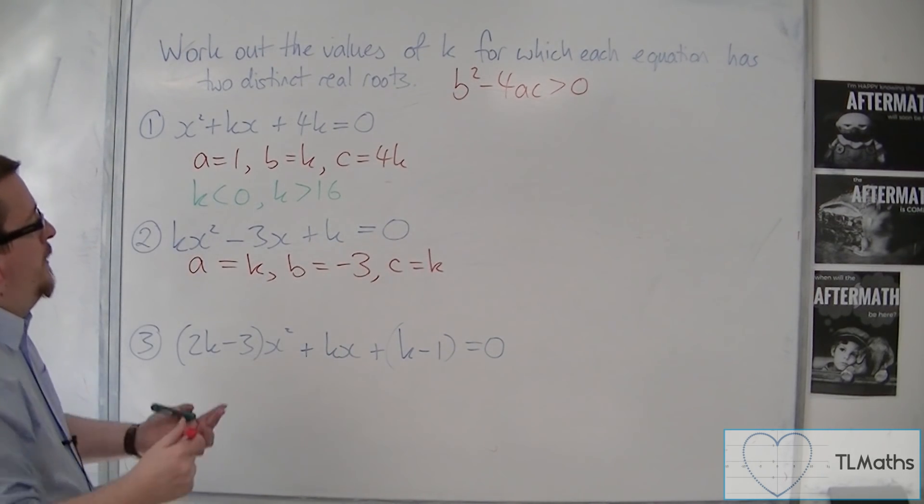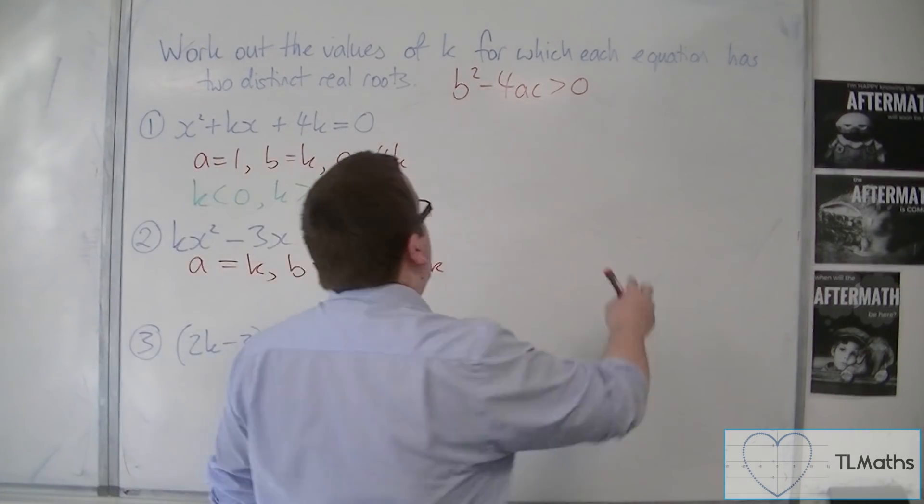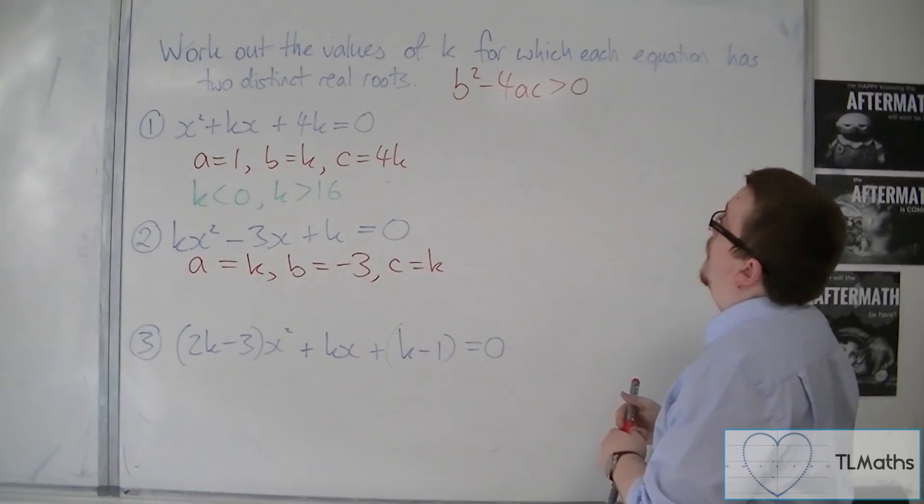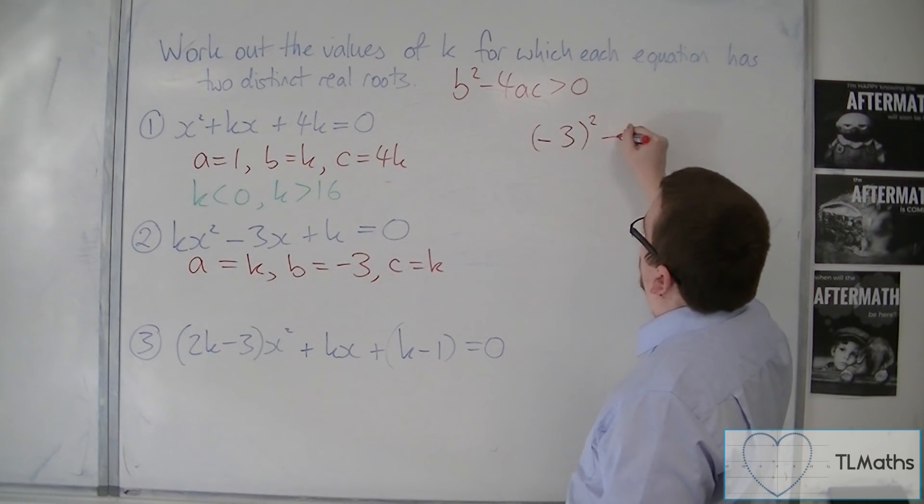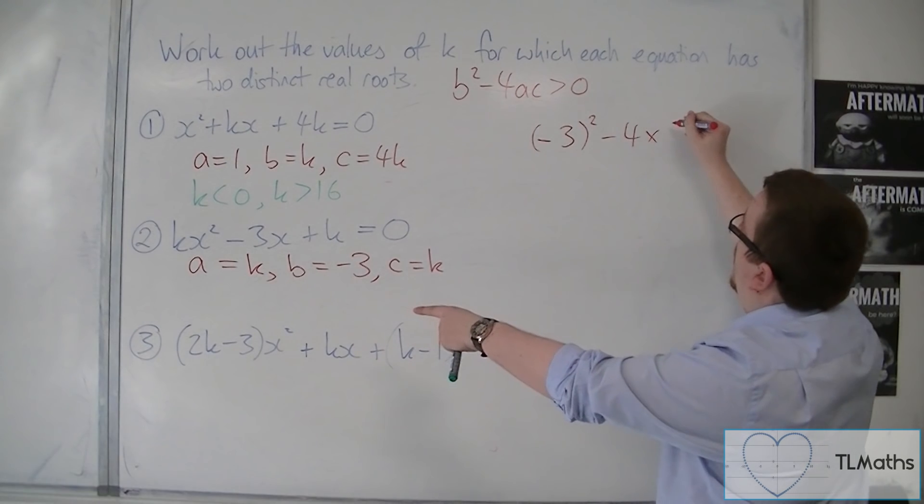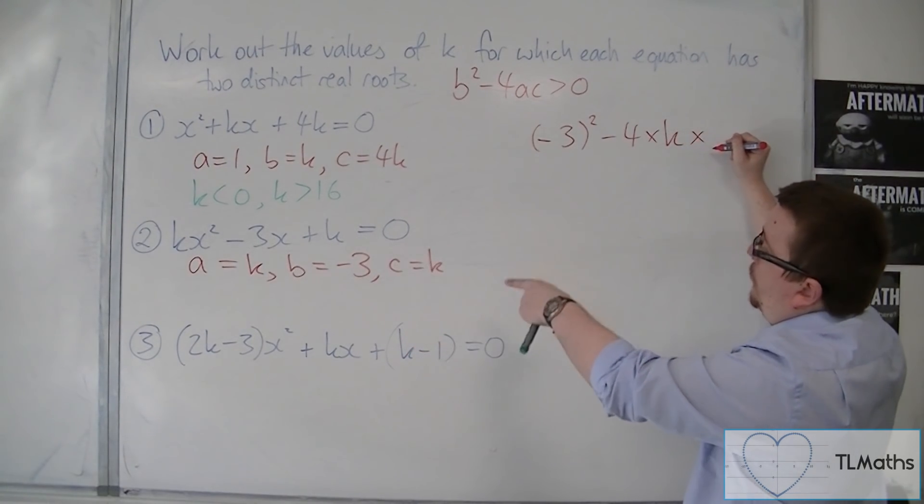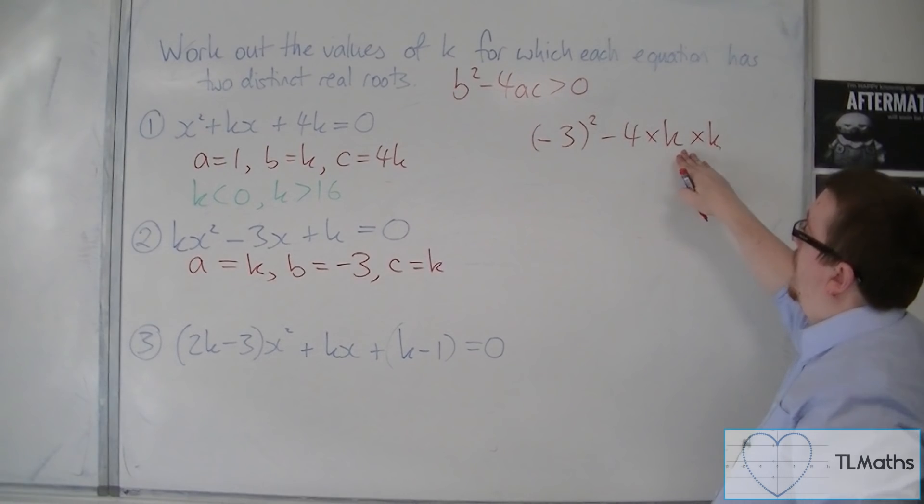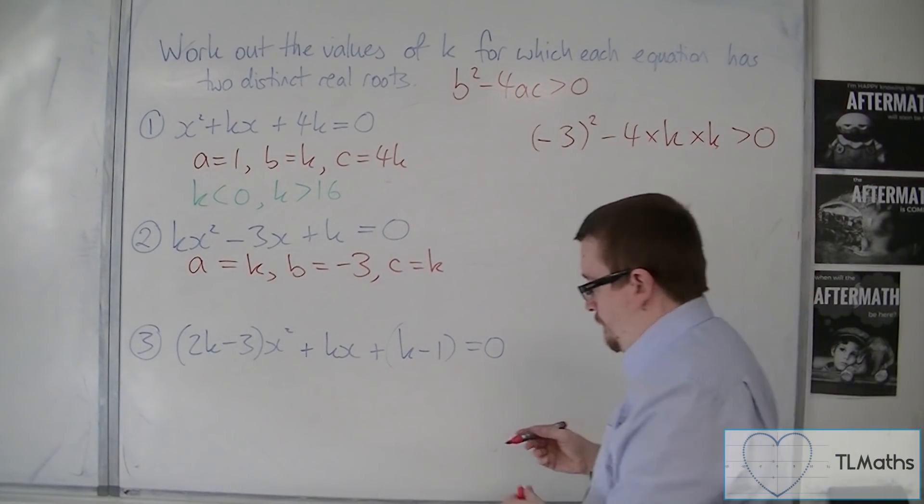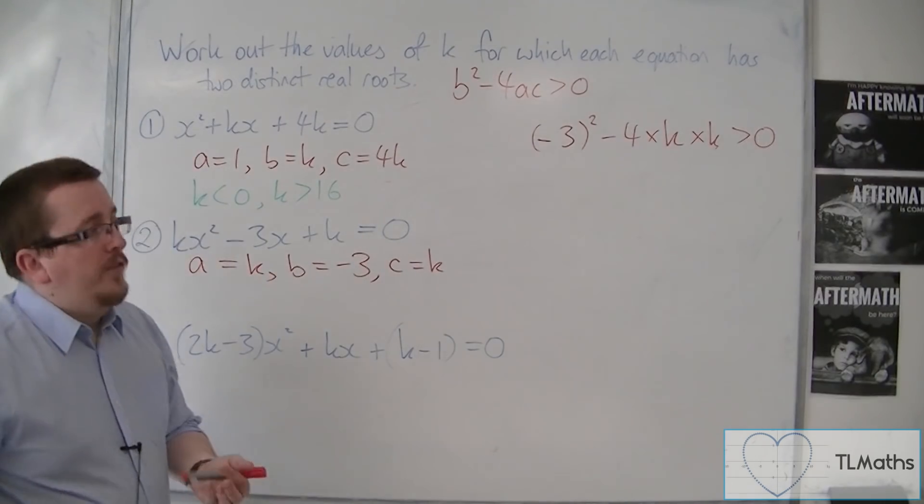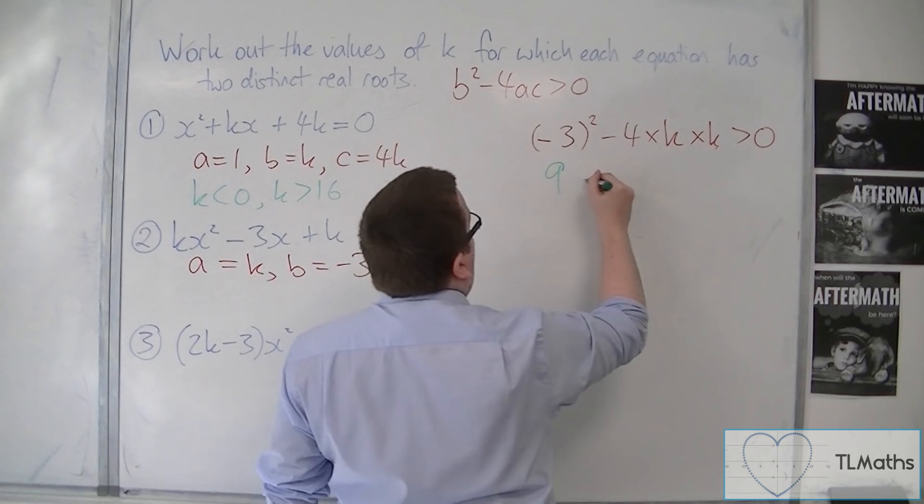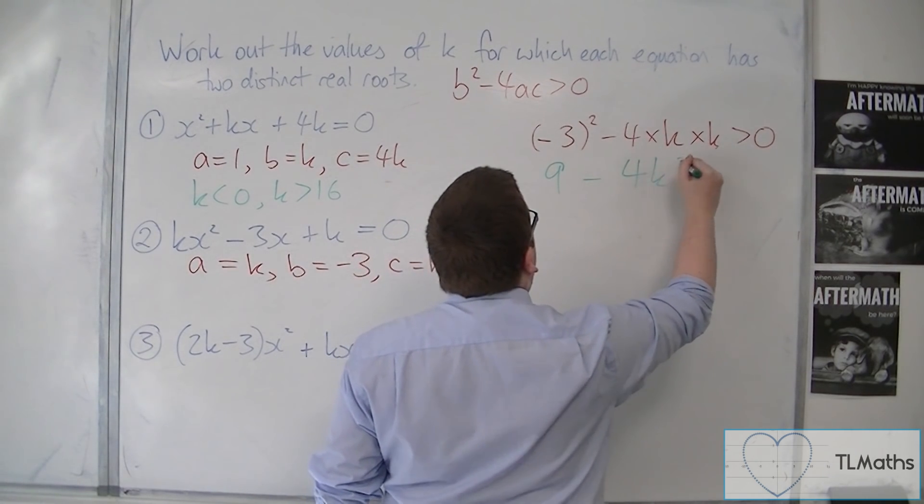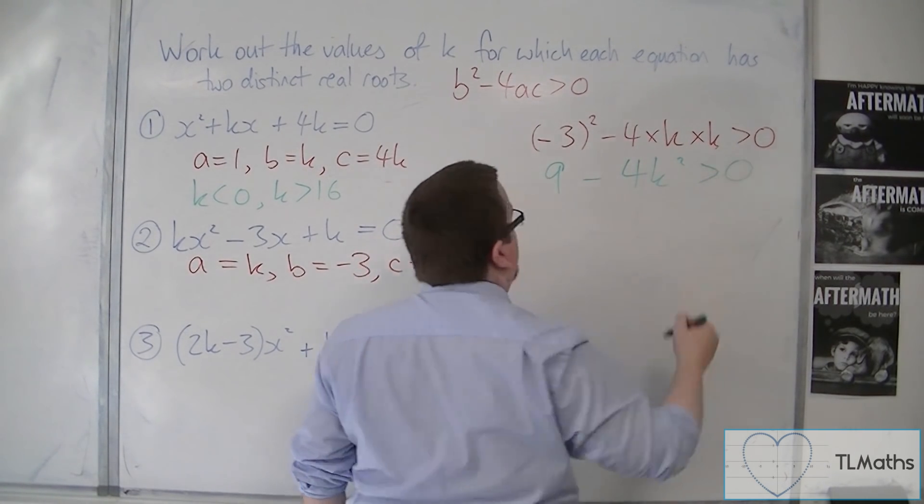OK? So we're then going to substitute these values into the discriminant. So we have minus 3 squared, take away 4 lots of a, times c. So we have minus 4 times k times k, and that's got to be greater than zero. So we have minus 3 squared, which is 9, take away 4k squared, which is greater than zero.